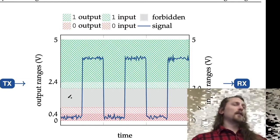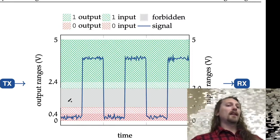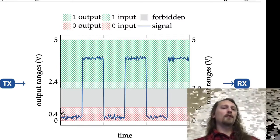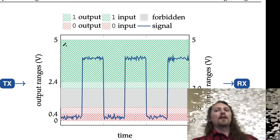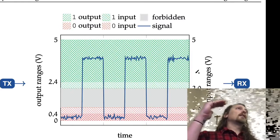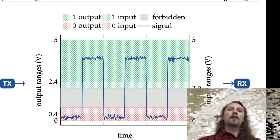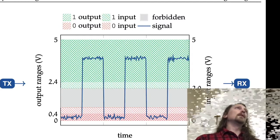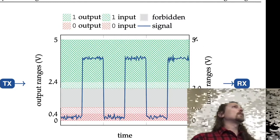If you're outputting and you want it to be zero, it should be between zero and 0.4 volts. If you're outputting and you want it to be a one, it should be between 2.4 and five volts. On the input side, the range gets a little larger. So on the input side, a zero goes from zero to 0.8 volts as acceptable to be interpreted as a zero, and between two and five volts is interpreted as a one.